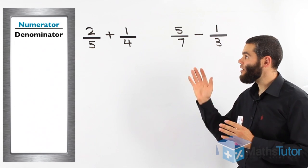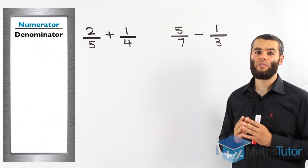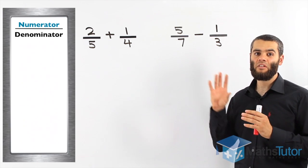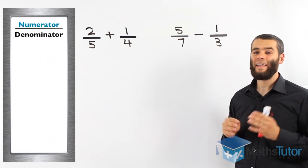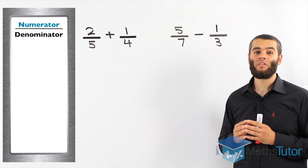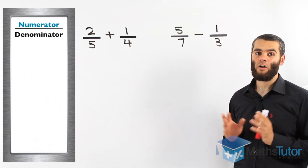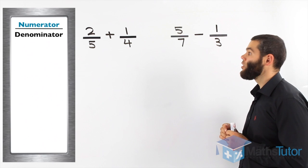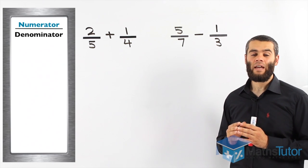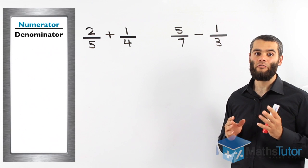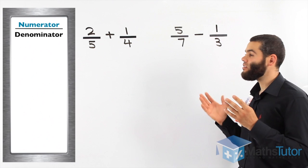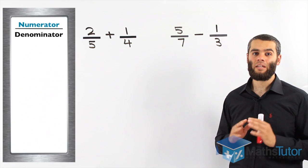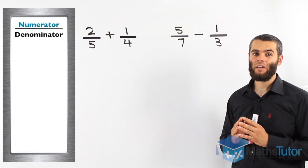First, we need to understand that we have the numerator and we have the denominator. The numerator is the number on top of the fraction bar and the denominator is the number on the bottom of the fraction bar. When we have a fraction added to another fraction or a fraction take away another fraction and we notice that the denominators are different, we have to make them the same.